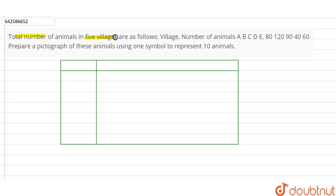number of animals in five villages are as follows: Village A, B, C, D, E, number of animals 80, 120, 90, 40 and 60 respectively.